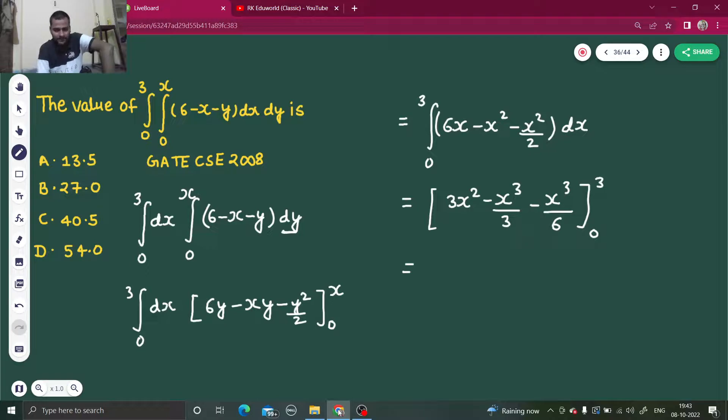So this will be 3 times 3 squared, that is 9, so this is 27. 3 cubed by 3, that means 3 squared, which is 9. 3 cubed is 27 by 6. When you'll put the lower limit, each of the three terms will again become 0. So 27 minus 9 is 18 minus—this is 3 times, so 9 by 2 is 4.5. 18 minus 4.5 is 13.5.